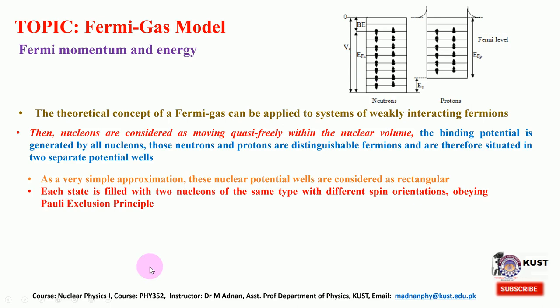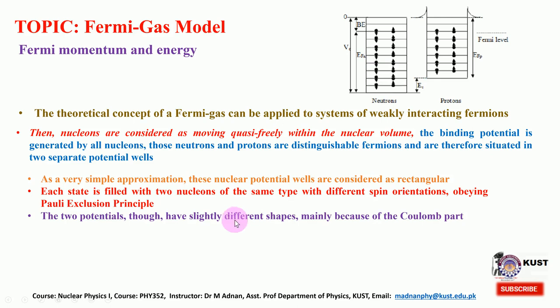Each state is filled with two nucleons of the same type with different spin orientation, following the Pauli exclusion principle. Since these particles obey Fermi-Dirac statistics they are fermions, so they cannot have the same set of quantum numbers — two identical nucleons must have different spin orientation. The two potentials have slightly different shapes mainly because of the Coulombic part. This Coulombic force acts between proton-proton, so the proton well is not as deep compared to the well for the neutrons.